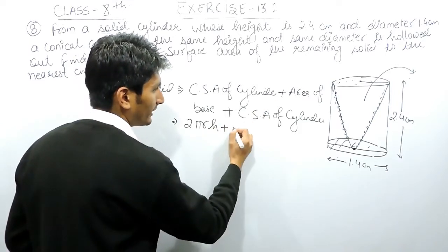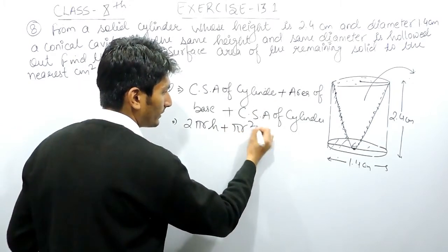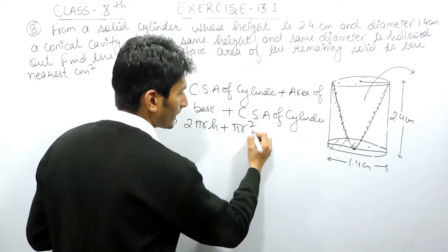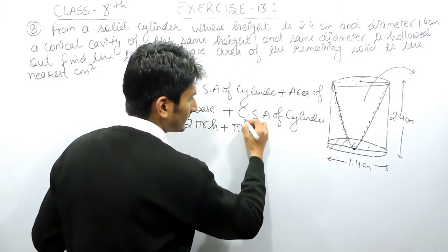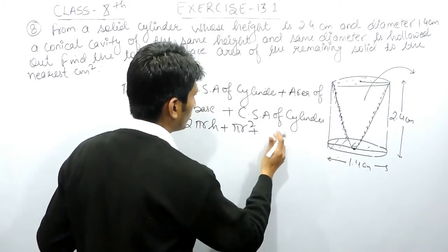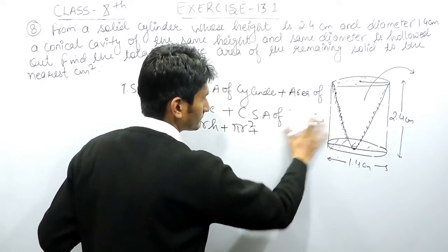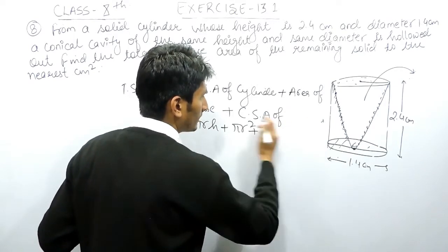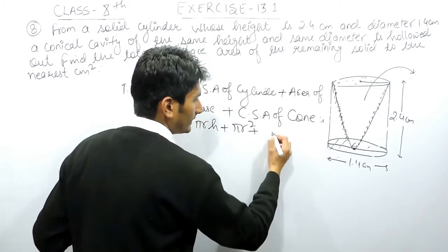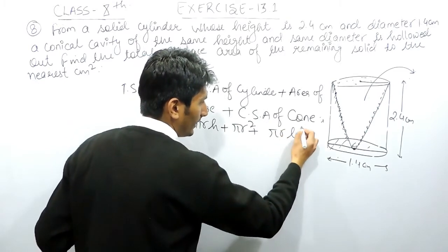The curved surface area of the cylinder is 2πrh. The area of the base of the cylinder will be πr² because the base is circular. And the curved surface area of the cone will be πrl.